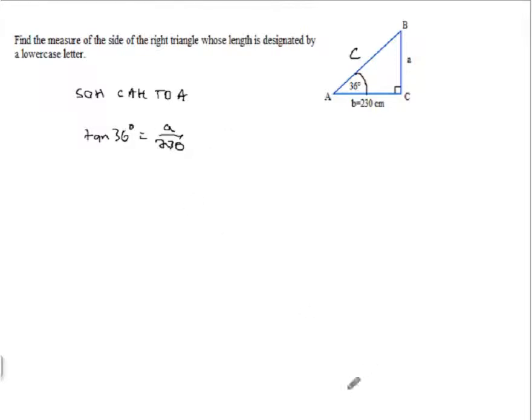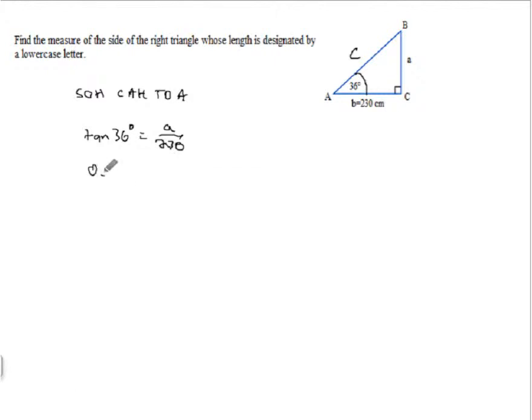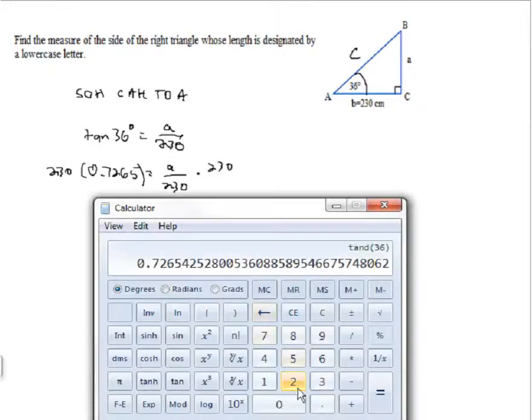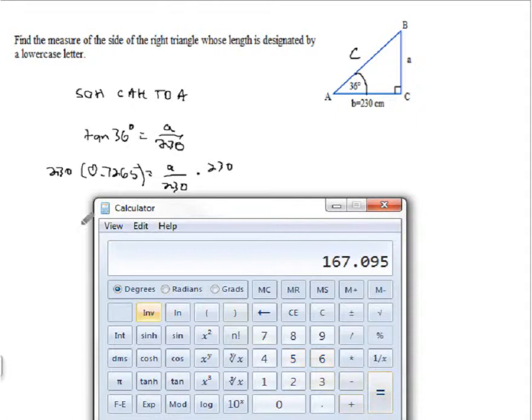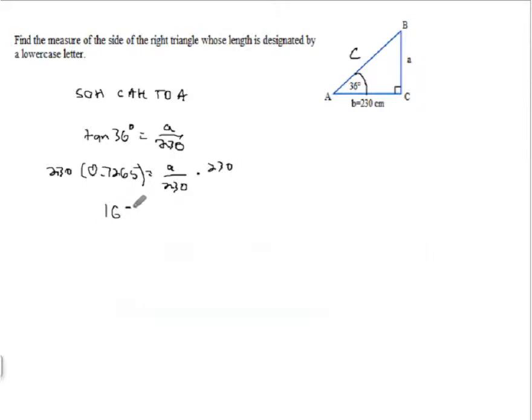And then we just have to use our calculator to find the tangent of 36 degrees is 0.7265. So, we'll write that 0.7265 is equal to A over 230. And now we just simply solve this equation for A, multiply both sides by 230. And we get 230 times 0.7265, 167.095.